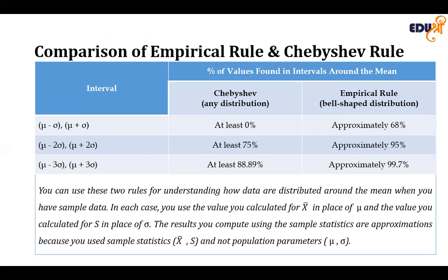Comparing the empirical rule and the Chebyshev rule: you can use both rules to understand how data are distributed around the mean when you have sample data. If you use the population mean instead of the sample mean, and the population standard deviation instead of the sample standard deviation, note that the results computed using sample statistics are approximations, because you are using sample statistics and not the population parameters.